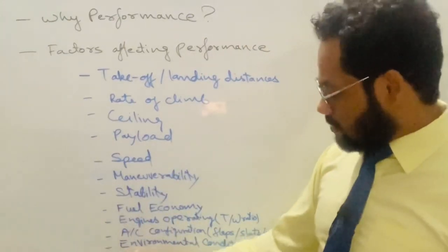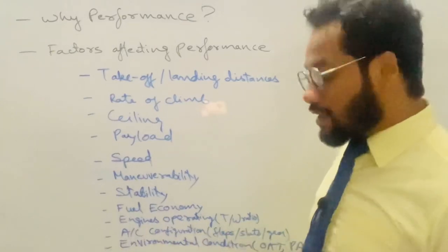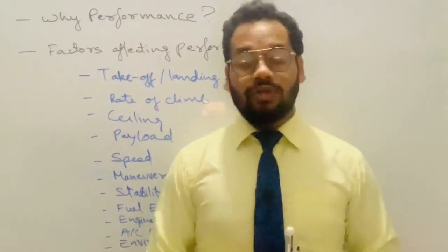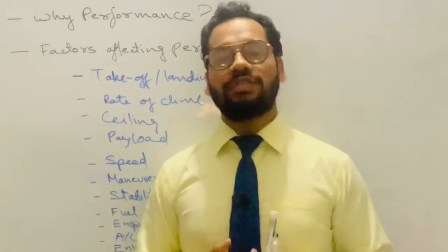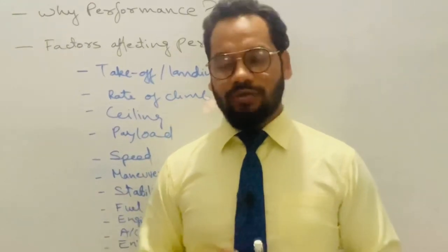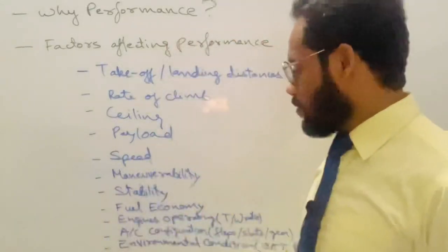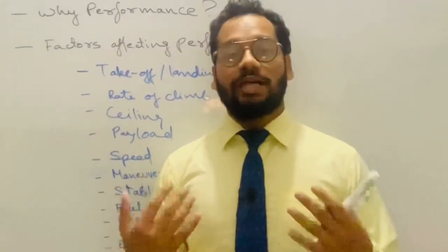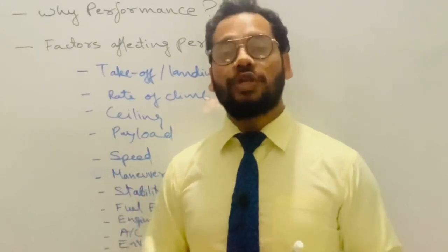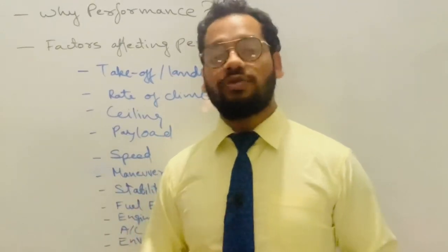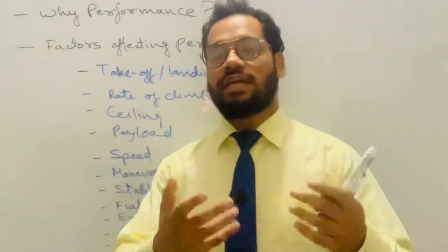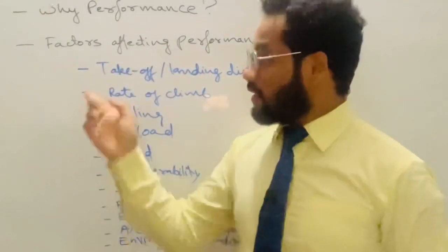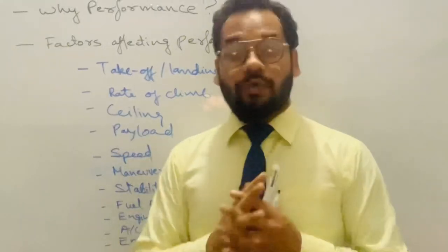The last and very important factor is environmental conditions. Environmental conditions are very important to fly an airplane, which is why you always get meteorological information. Key environmental parameters include OAT (outside air temperature), PA (pressure altitude), DA (density altitude), and moisture — how much moisture is in the air. All these parameters which affect airplane performance are very important to study.